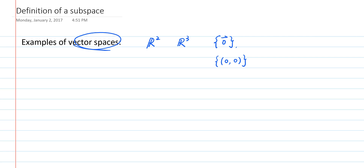Now we notice that this set, let's say it's called V0, is a subset of R2, because the only element in the set — the two-tuple of zeros — is also an element of R2. If you haven't heard of a subset or don't know what it means for a set to contain another set, you need to pause and look for a video describing what a subset is, then come back to this video.